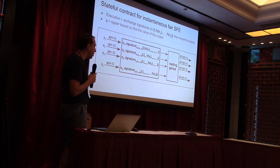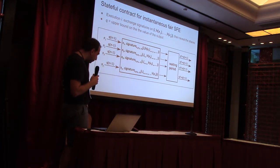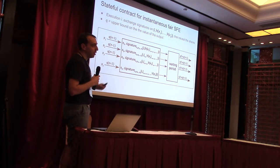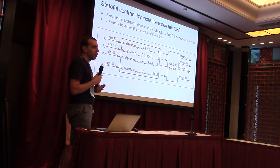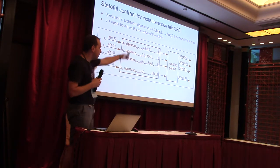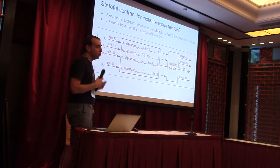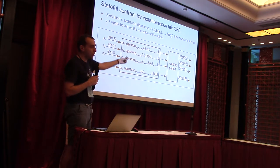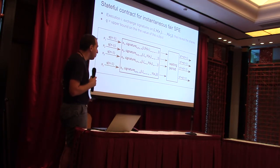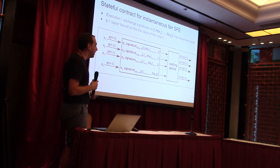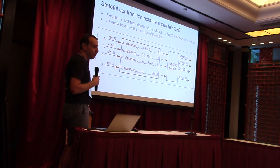An important point: this is a public blockchain. If a dishonest party makes a false accusation against an honest party, the honest party has the waiting period to react, reveal what they should reveal, and not lose money. Because the blockchain is public, as long as the waiting period parameter is sufficient, everything is secure.